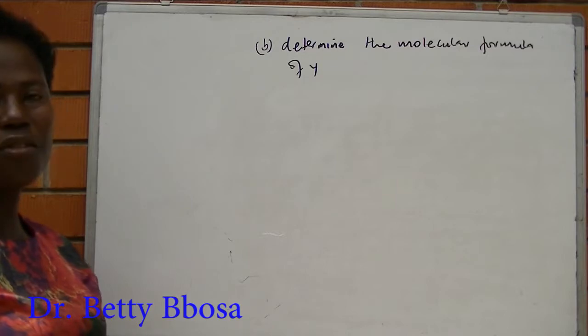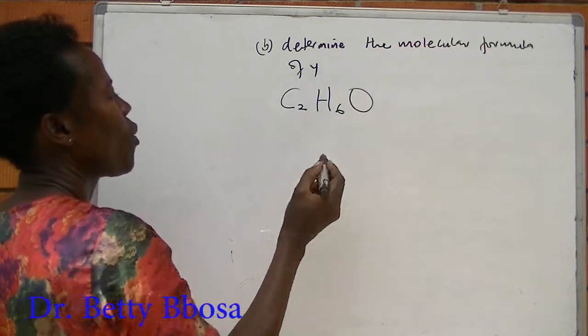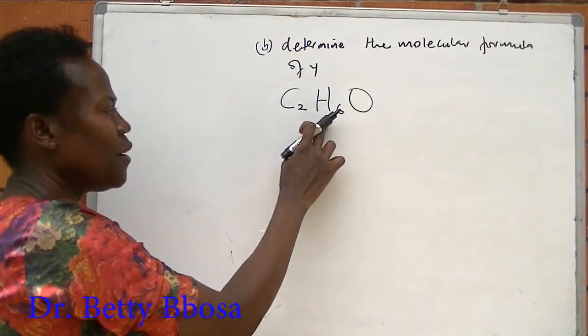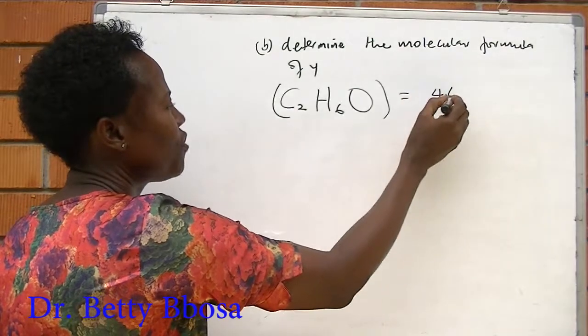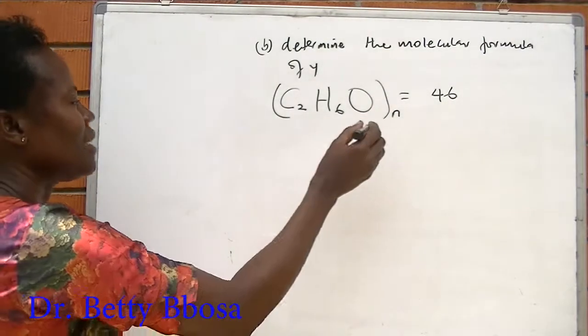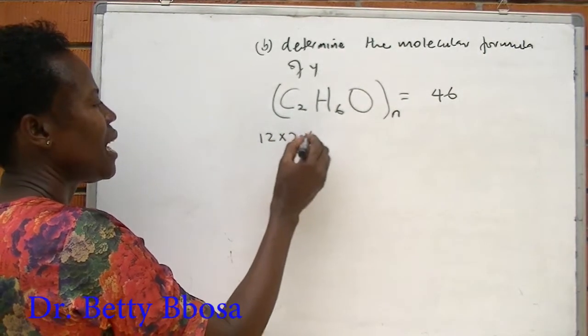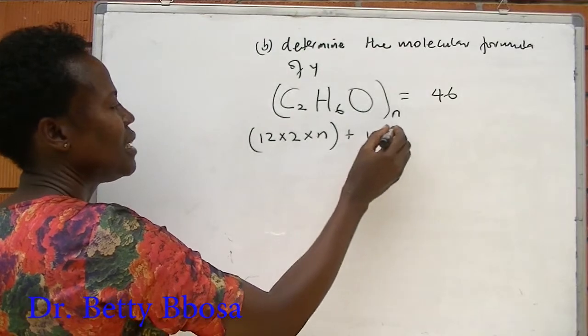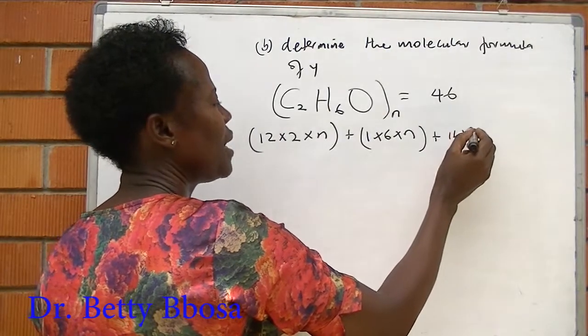Determine the molecular formula of Y. Remember, our empirical formula was C2H6O. Now, they want to find out how many atoms of carbon, how many atoms of hydrogen, and how many atoms of oxygen all together will add up to the molecular mass of 46. We don't know them. Let us represent them with N. What does this mean? It means that carbon, which is 12, times 2 atoms, times N, plus hydrogen which is 1, times 6, times N, plus oxygen, which is 16, times 1, times N.